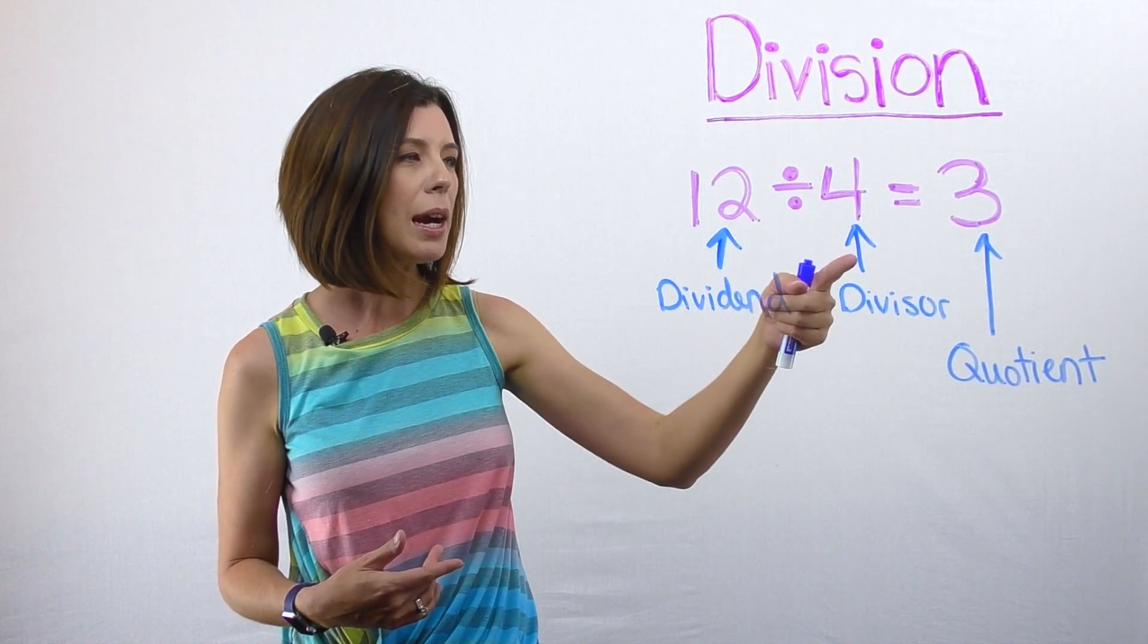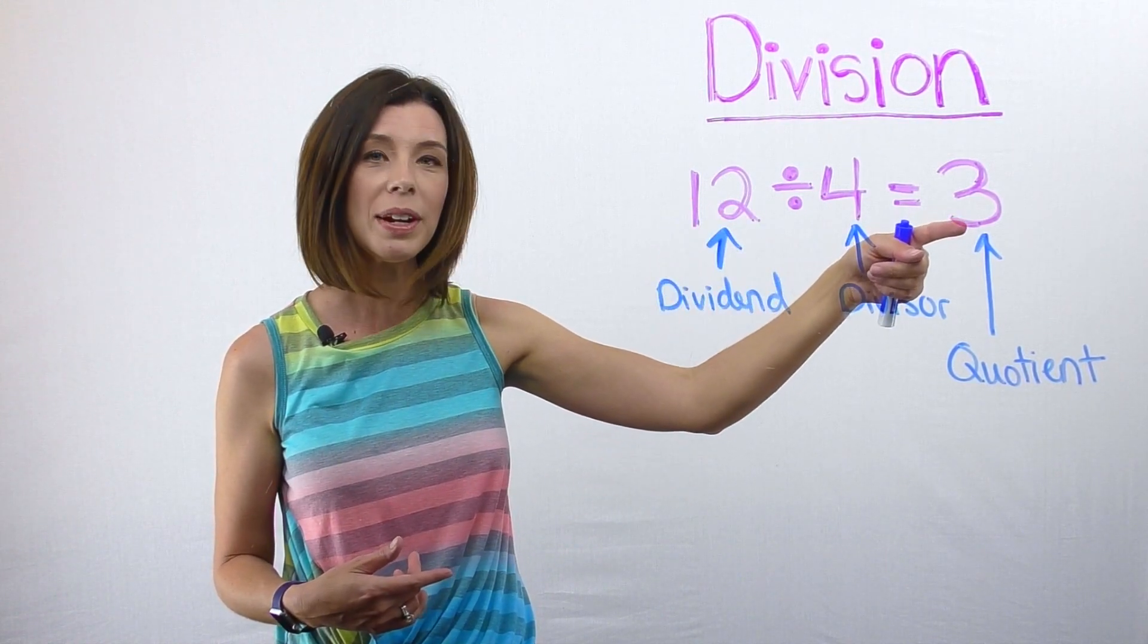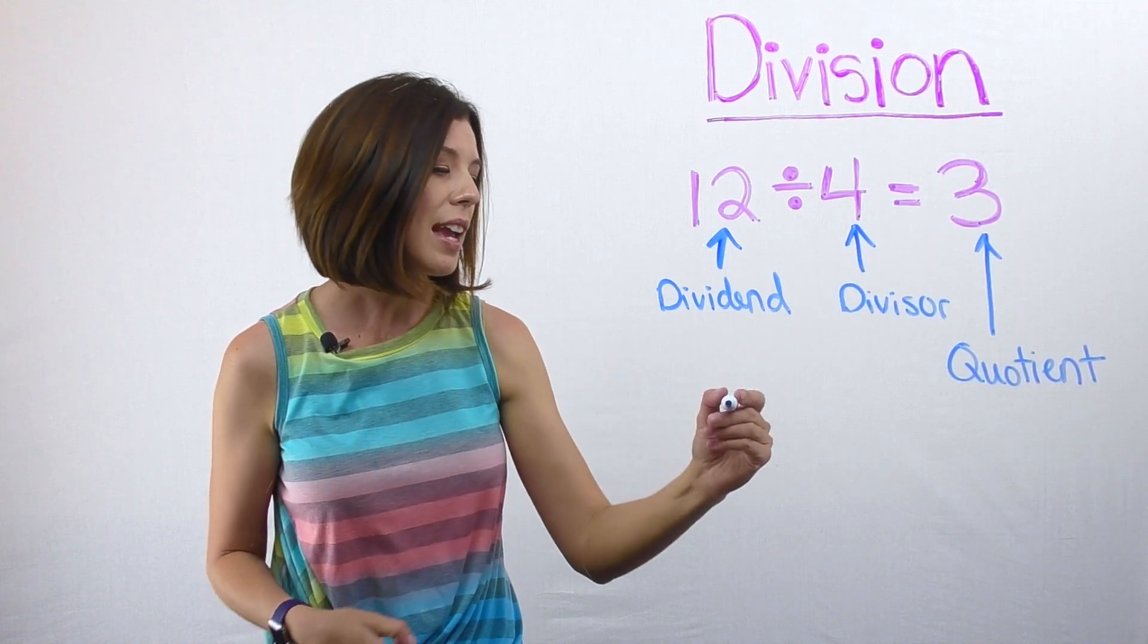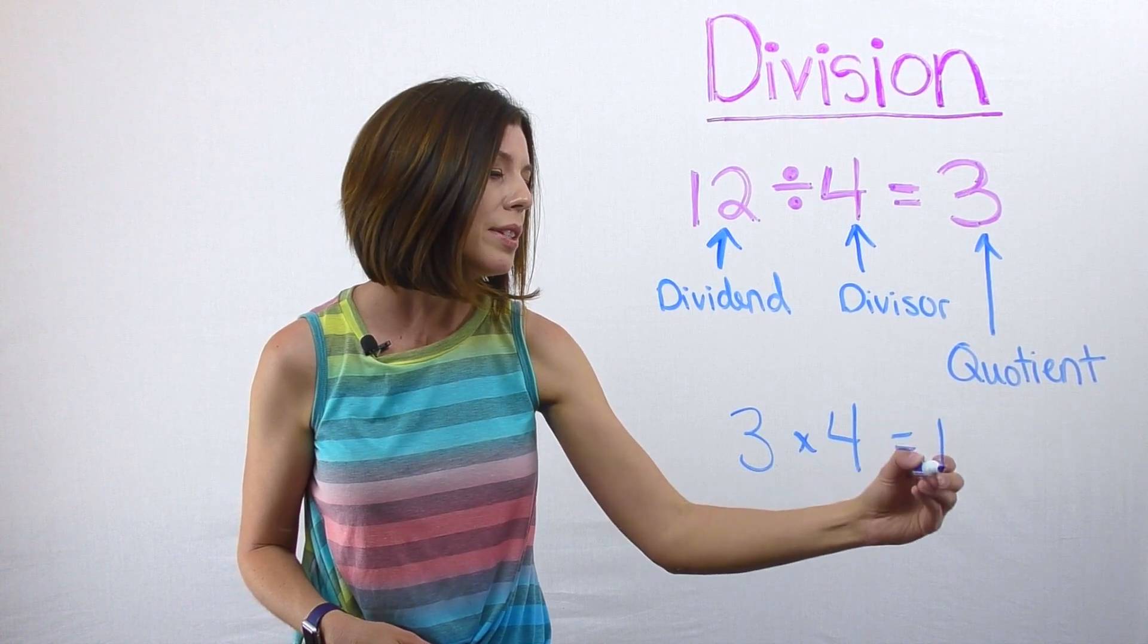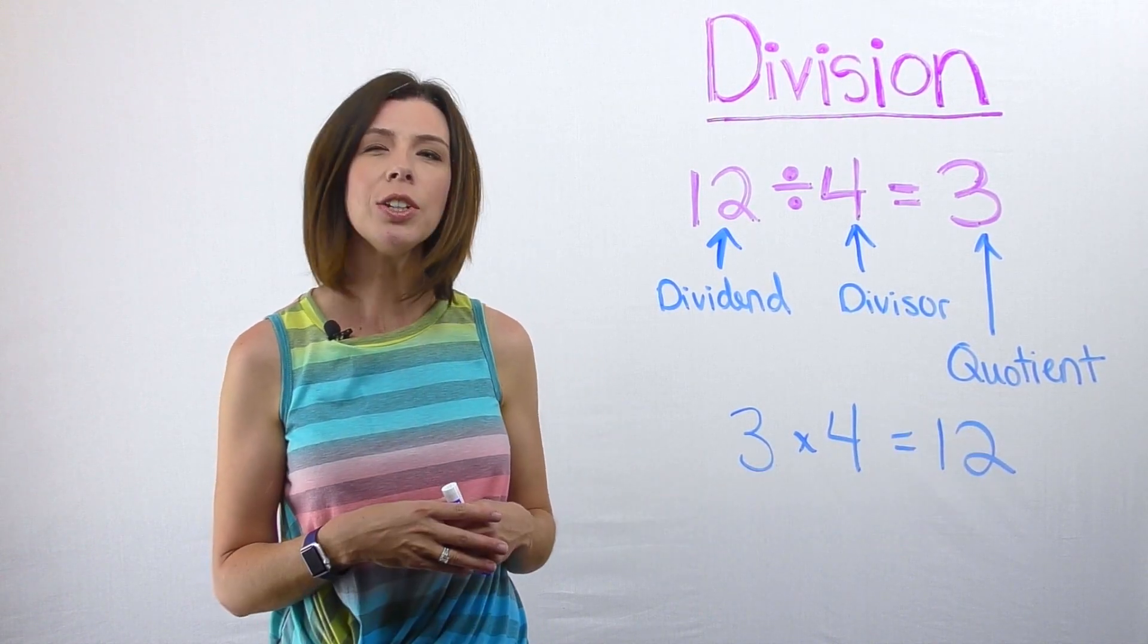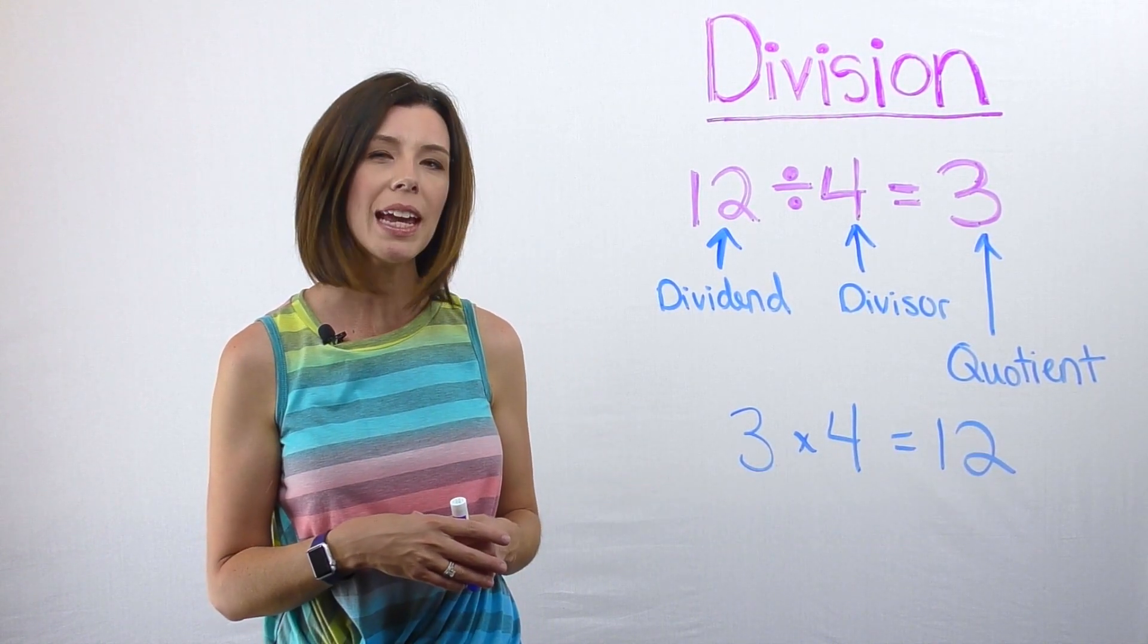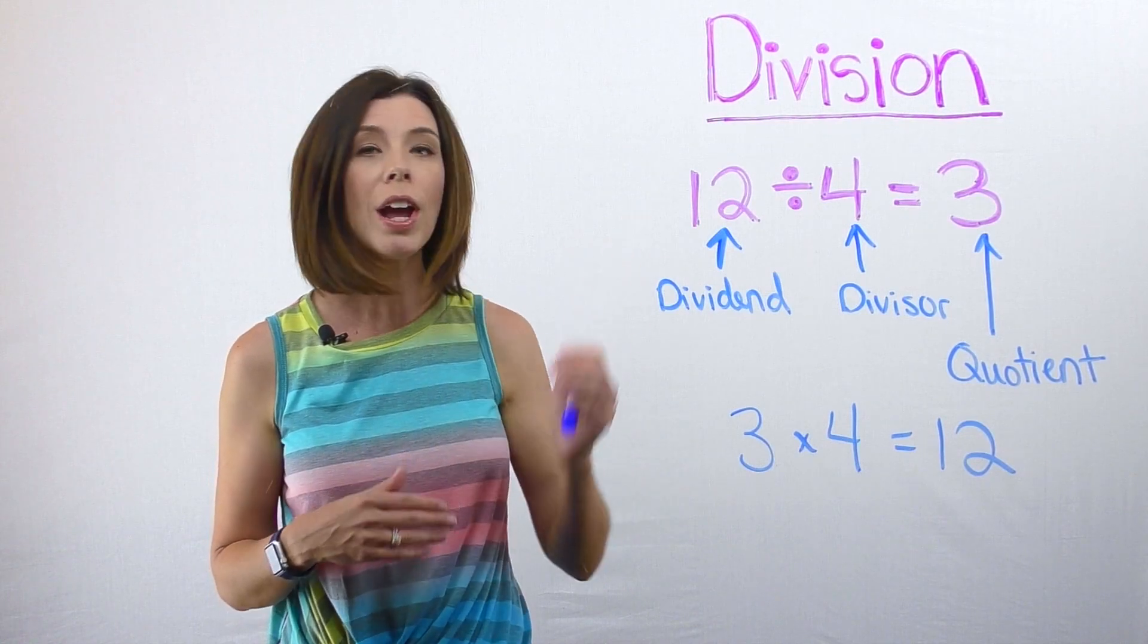Originally we were saying how many copies of four were in 12. There were three. Likewise, we can say three copies of four is equivalent to 12, and use that corresponding multiplication sentence to check our division.